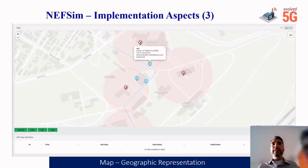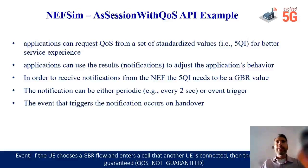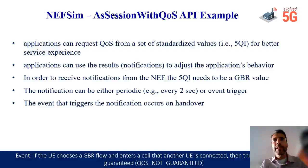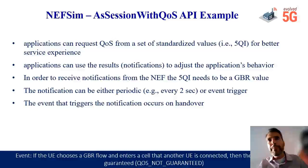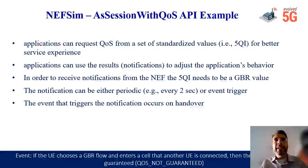Let's discuss how the NEF can support a vertical application through an example of the Sessions with QoS API. Generally speaking, applications request QoS confirmation from the network in order to adapt their behavior for optimizing performance. Applications can request QoS from a set of standardized values, for example 5QI. Depending on the notifications they receive, they will adapt accordingly. The scope is typically QoS optimization. In order to receive notifications from the NEF, the 5QI needs to be a GBR value, and the notification can be either periodic — for example, every two seconds — or based on an event trigger.